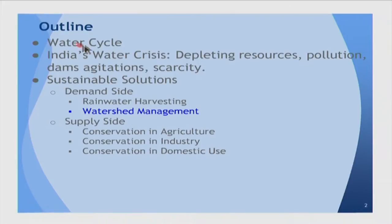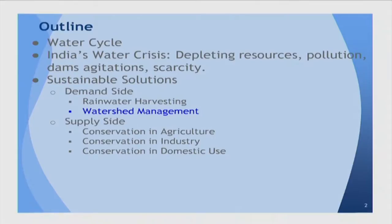Getting back to the topic, this is the outline slide. We saw the water cycle, we saw the water problem in all its various dimensions, and then we also started looking at some solutions, in which we looked at rainwater harvesting and how that is useful and very important. Now we are going to talk about something equally important, particularly for the rest of the water that we need. Rainwater harvesting was mainly in the context of providing adequate drinking water, although rainwater should be harvested for more reasons than just drinking water.